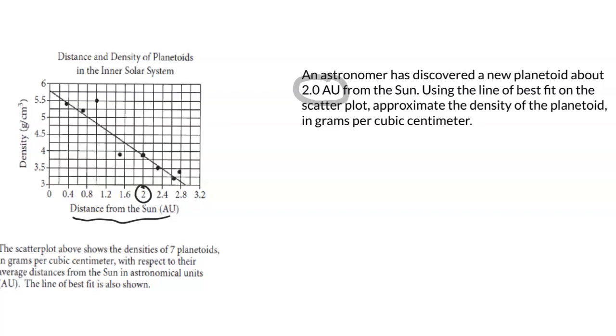If you take a look at the y-axis, you can notice that every 2 tick marks is 0.5. If every 2 tick marks is 0.5, that means that every 1 tick mark is going to be half of 0.5 or 0.25.